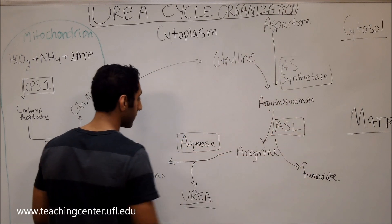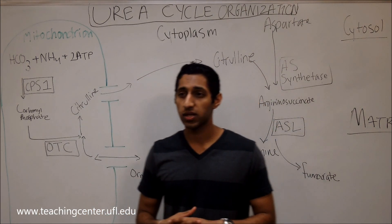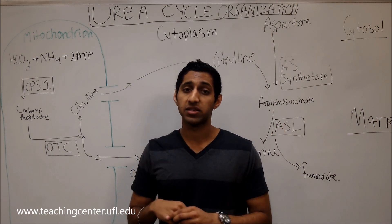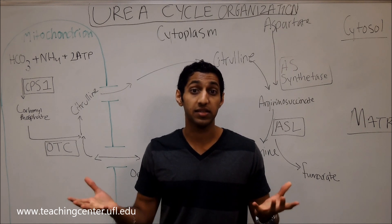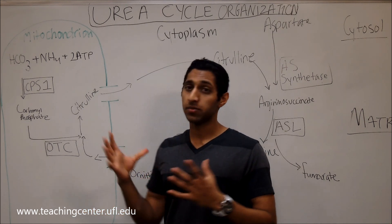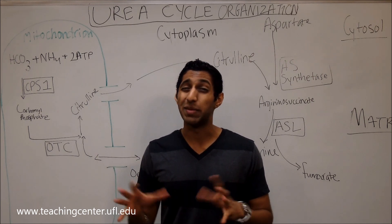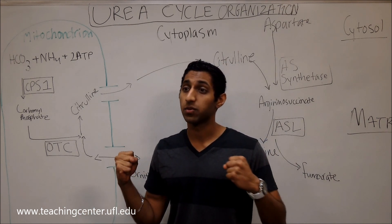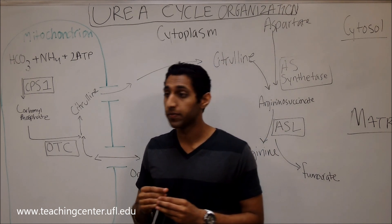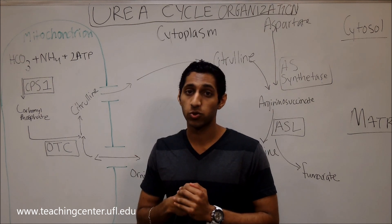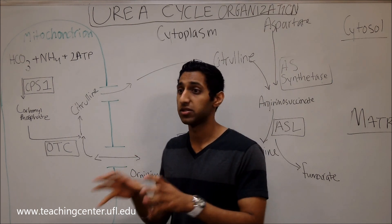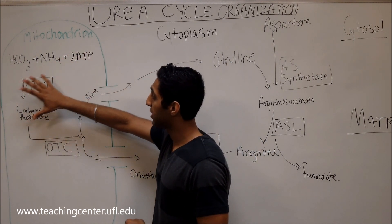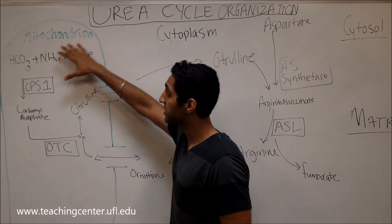Let's focus on the mitochondrion first. We know that the mitochondrion has proton gradients that drive oxidative phosphorylation, which gives us energy. Any ammonium that goes in, since ammonium is a base, can really mess up that proton gradient. So cells have devised a way to control the toxicity of ammonium by packing it into carbamoyl phosphate and later into citrulline for export.